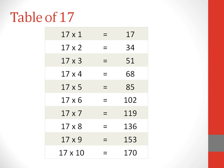17 sixes are 102. 17 sevens are 119. 17 eights are 136. 17 nines are 153. 17 tens are 170.